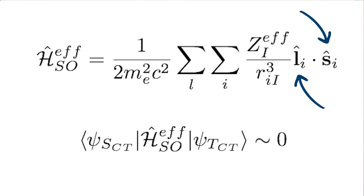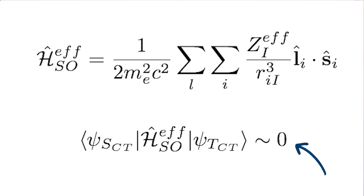When moving from a triplet state to a singlet state, we're changing the spin term. To conserve total angular momentum we have to compensate this with a change in orbital angular momentum. But in most cases with charge transfer states, the close-lying singlet and triplet states are composed of the same orbital characteristics — essentially a HOMO-LUMO excitation. In this scenario there is no change in orbital angular momentum, so total angular momentum is not conserved, and as a result the spin-orbit coupling is going to be close to, if not, zero.